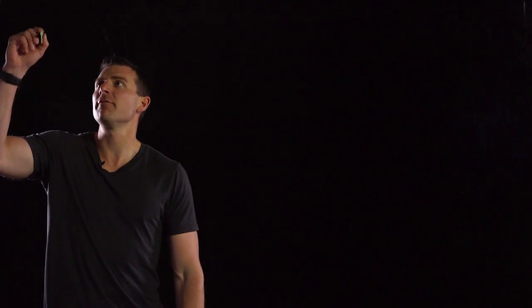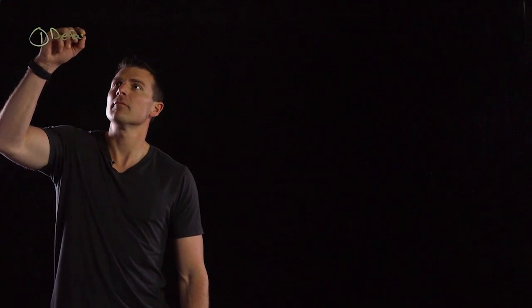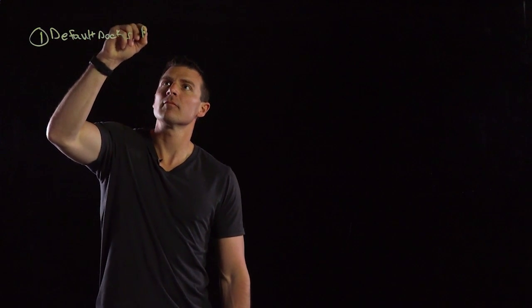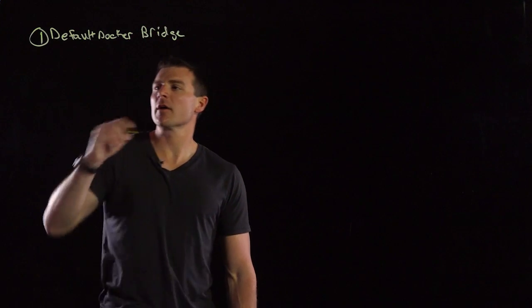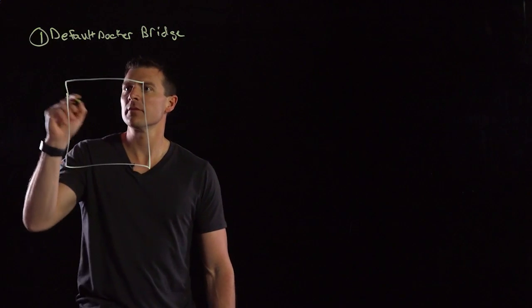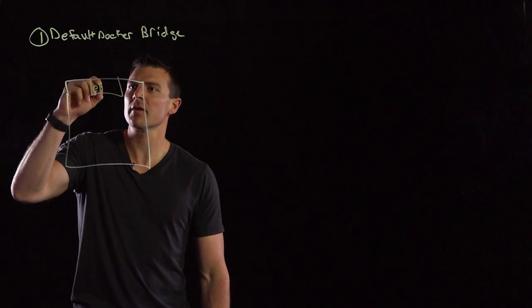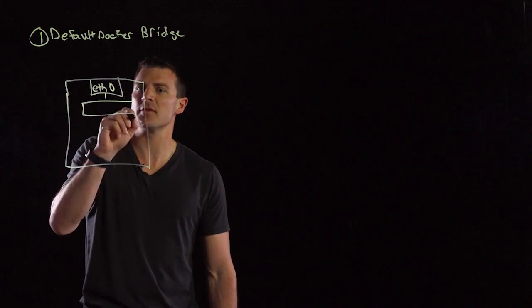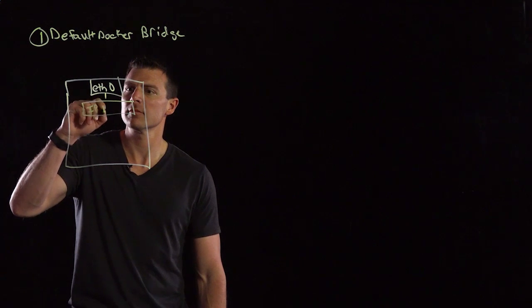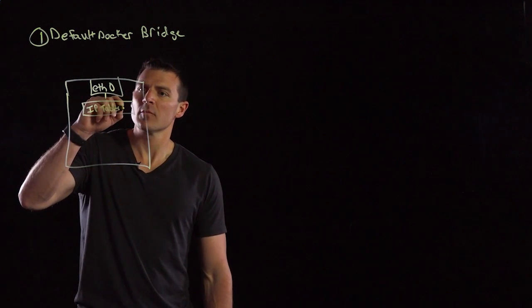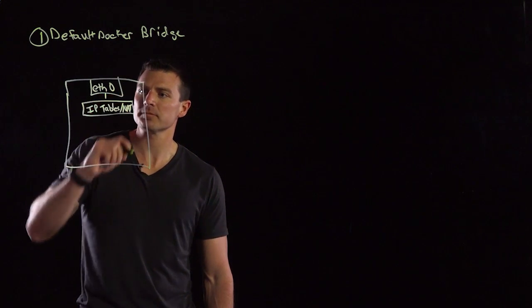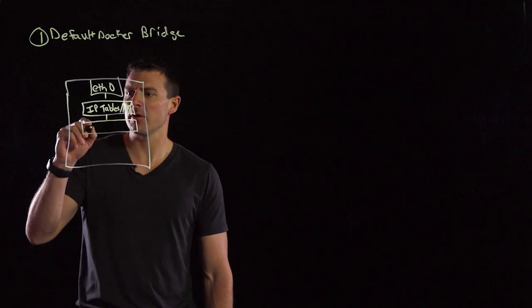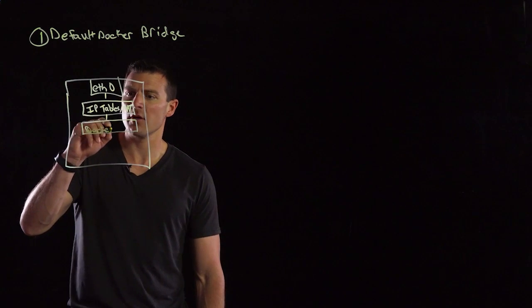So the first one would be the default Docker bridge. With the default Docker bridge, you have some type of container host. This container host is going to have an Ethernet adapter, and then it's going to go into the IP tables of the Linux kernel, which is also going to perform a NAT function. After that, we're going to draw the default Docker bridge. This is usually called Docker 0.